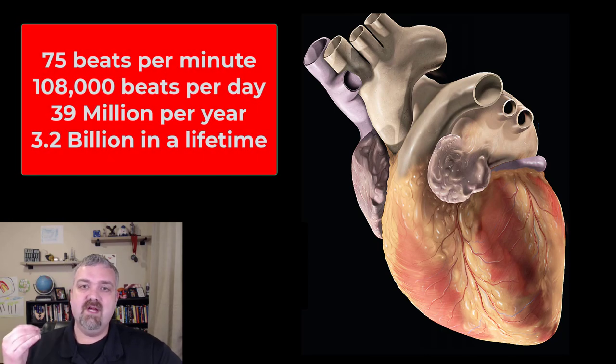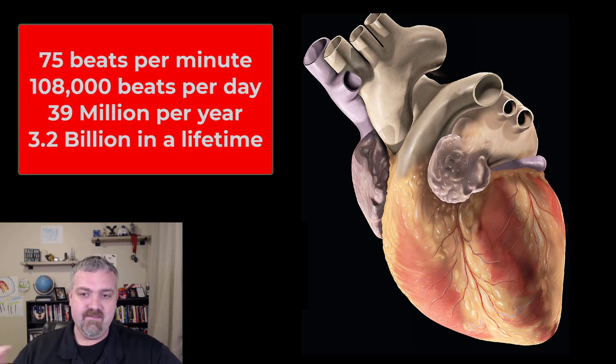So if your heart beats about 75 beats a minute, that's going to be 108,000 heartbeats a day, 39 million a year, and give or take about 3.2 billion heartbeats in your lifetime, depending on how long you live.